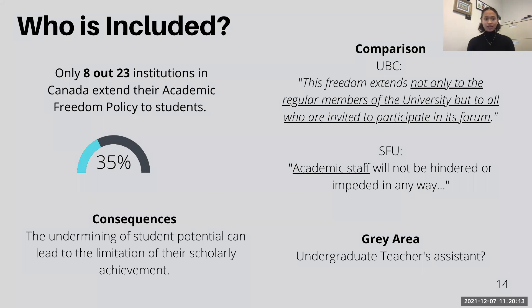The consequence of this is that denying students adequate protection implicitly undermines a student's ability to generate work that is significant enough to be notable or revolutionary in academia. Hence, the exclusion of students from academic freedom policies is harmful in fostering their potential, since they are confronted with larger barriers in their academic pursuits.